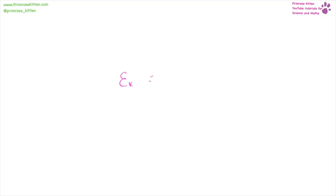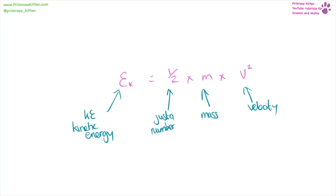Kinetic energy equals half times mass times velocity squared. Kinetic energy is measured in joules, mass in kilograms, and velocity in metres per second. With this equation, the squared applies only to the metres per second, so you have to do that bit first.